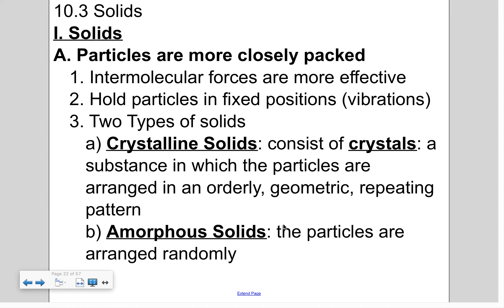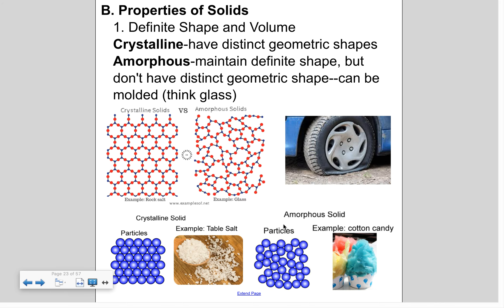There are two types of solids. Crystalline solids have a nice orderly geometric repeating pattern. The other type is called amorphous, where the particles are arranged very randomly. Properties of solids include a definite shape and volume. With crystalline solids, there's a very distinct geometric shape — table salt always breaks off into perfect little cubes. Amorphous solids maintain a definite shape but don't have a distinct geometric shape, so they can be molded, kind of like glass.